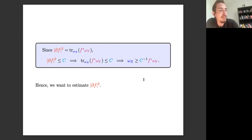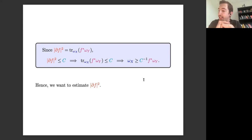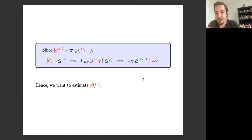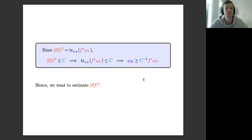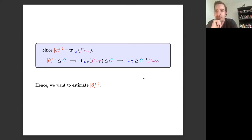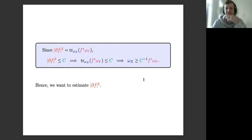There is some work — someone has done calculations with the Bismut connection and introduced a curvature constraint when looking at the Bochner formula in the Bismut case. I'm blanking on the name but I'll send it to both of you. If anyone does know Bochner formulas along the Gauduchon line, by all means send them my way.